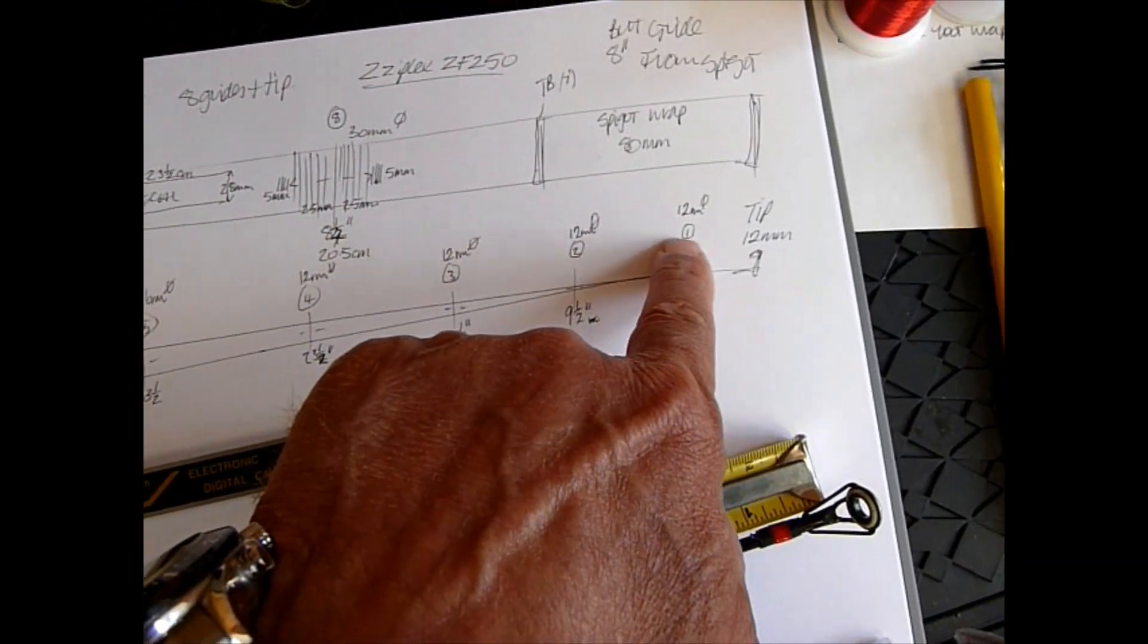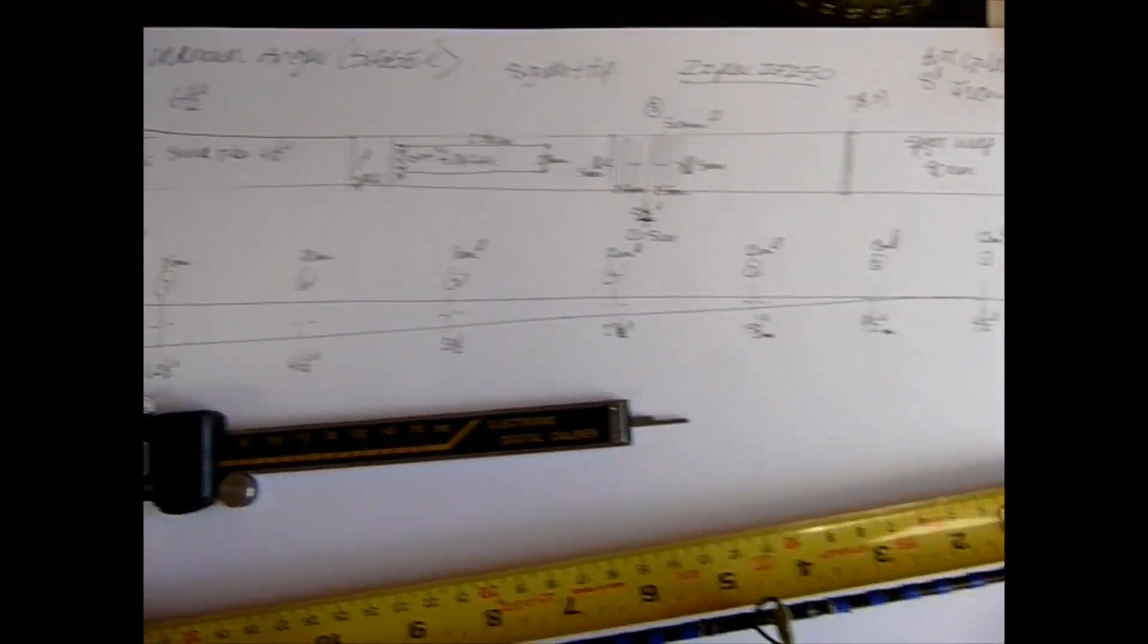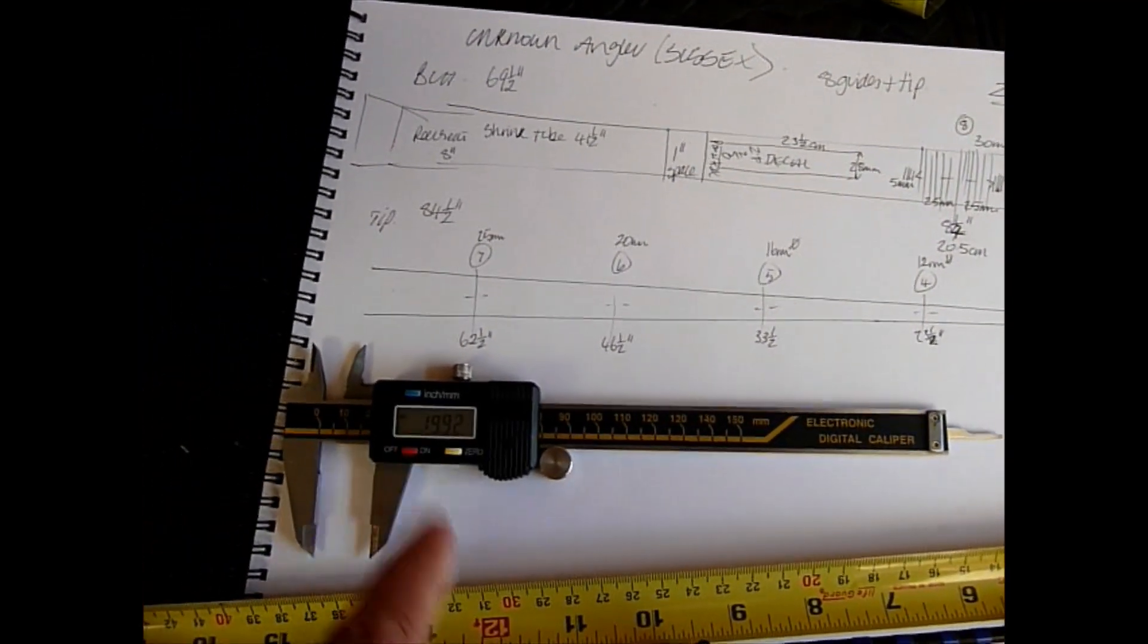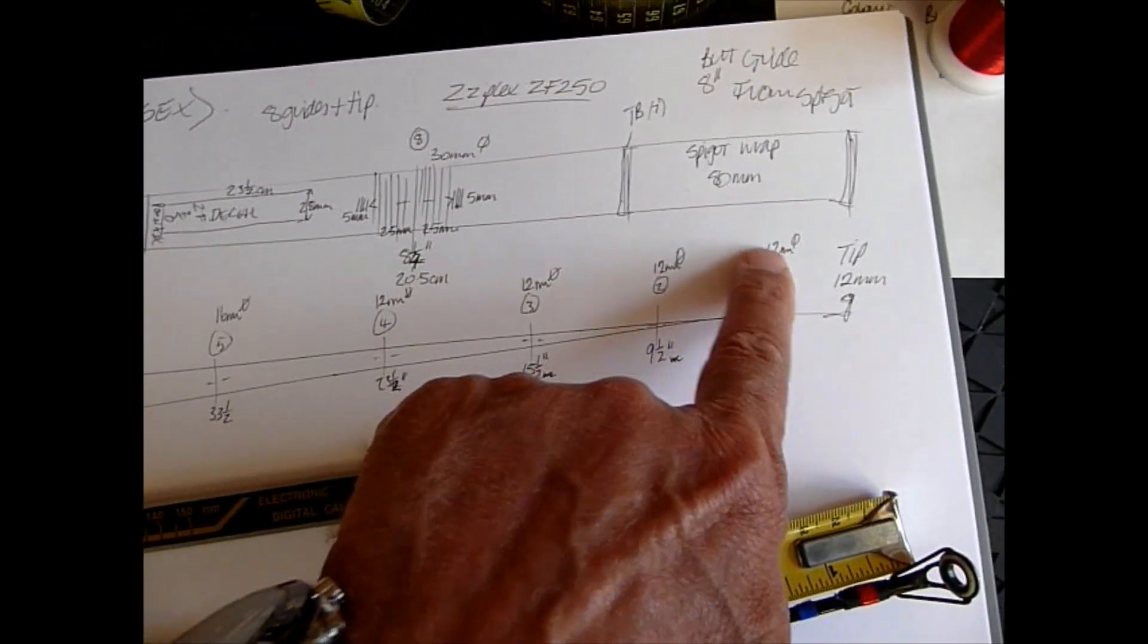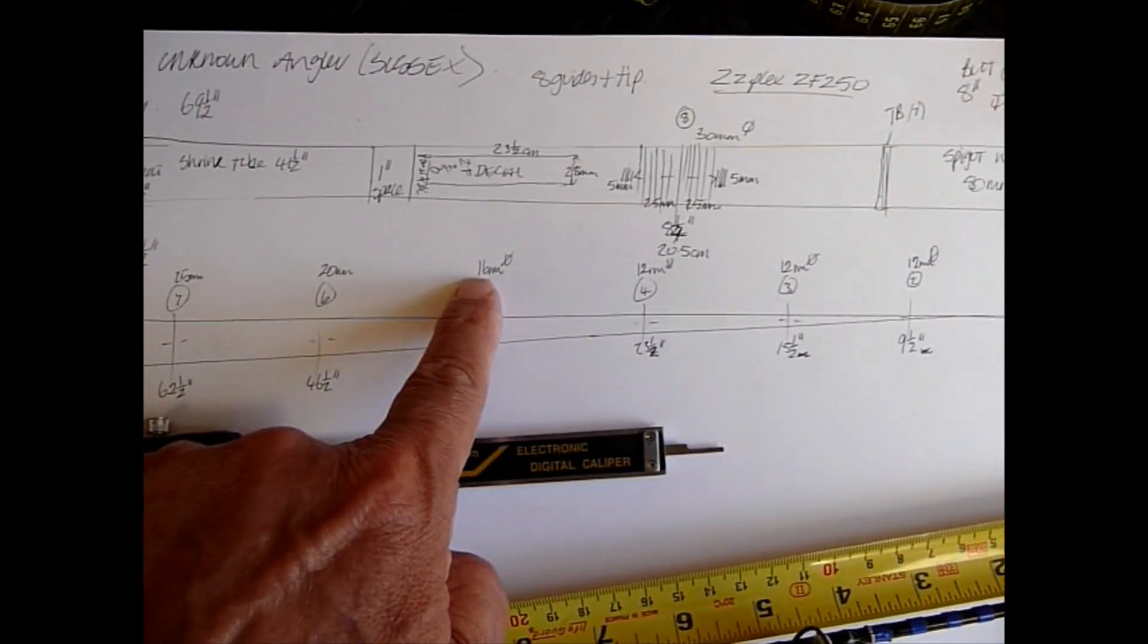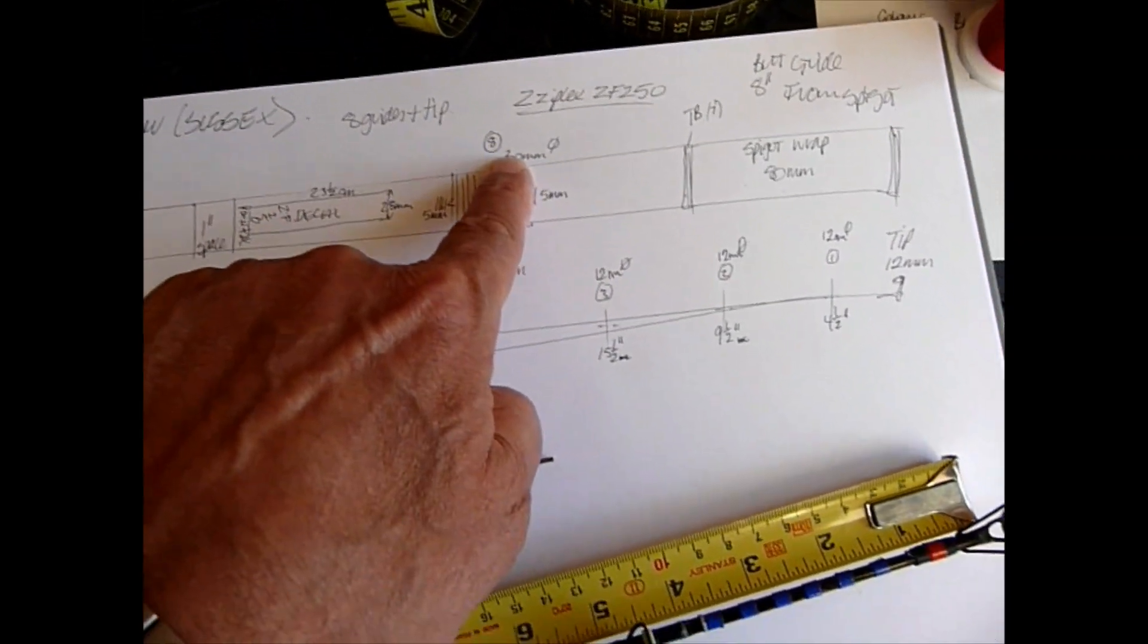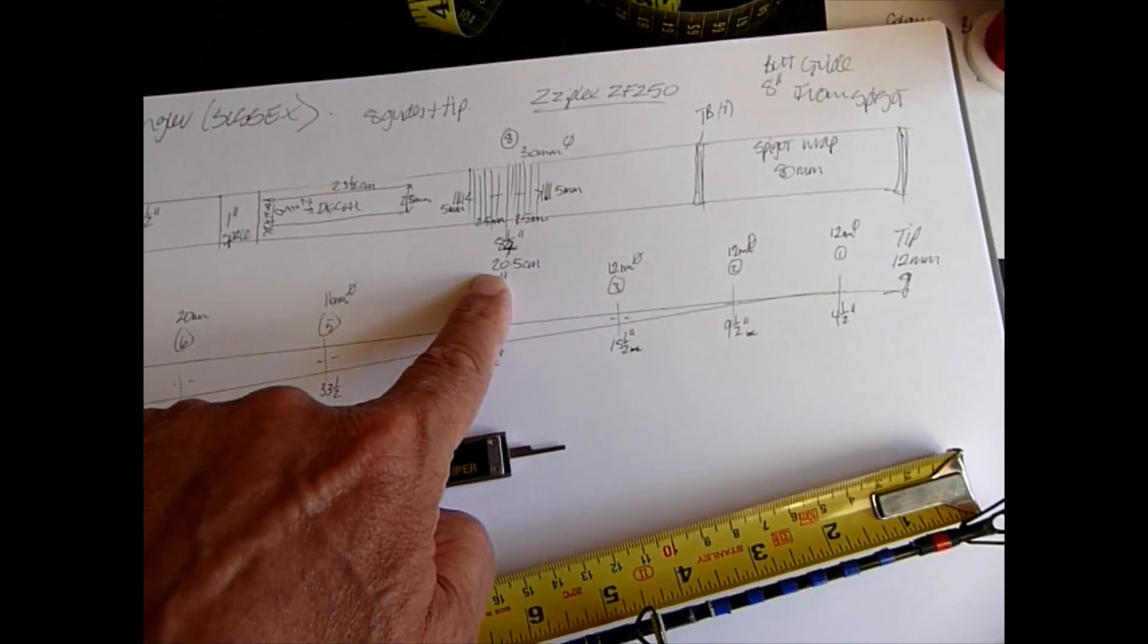You then need to know the diameter of your guides, so measure those with your digital calipers. The first four guides are 12 mil diameter, there's a 16, a 20, a 25, and then the butt guide's 30. Make sure that you mark that on there as well.